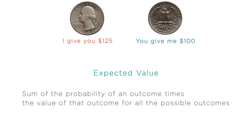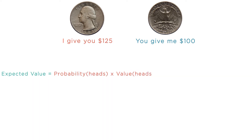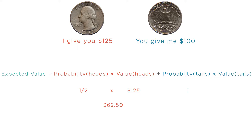In this case, there's a one-half chance the coin comes up heads and you win $125. The probability of that outcome times the value of that outcome to you is one-half times 125, or $62.50. And there's a one-half chance that the coin comes up tails and you lose $100. The probability of that outcome times the value of that outcome is one-half times negative 100, or negative $50. Adding these together gives us an expected value of $62.50 plus negative $50.